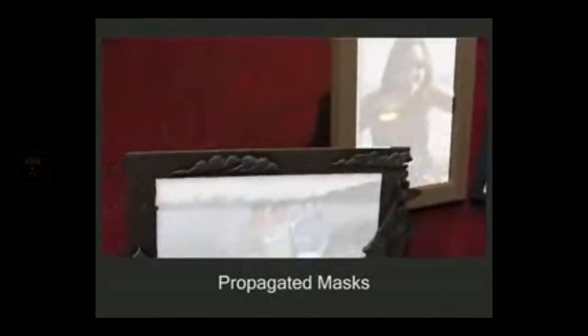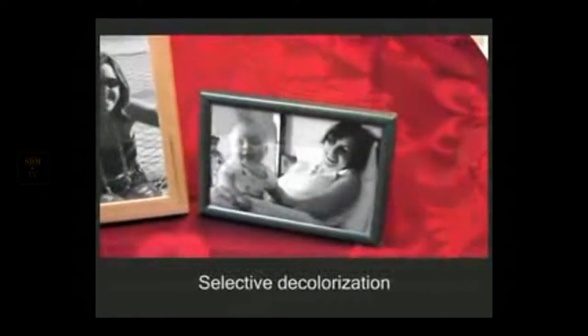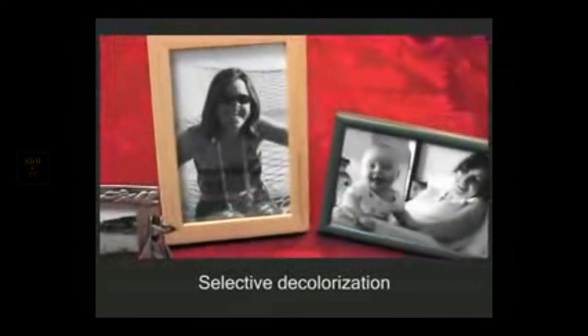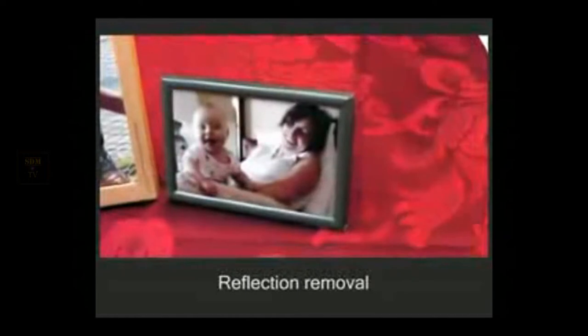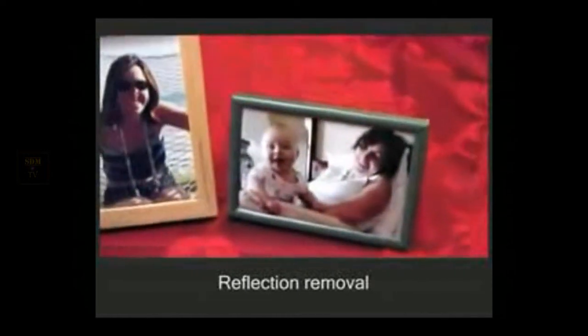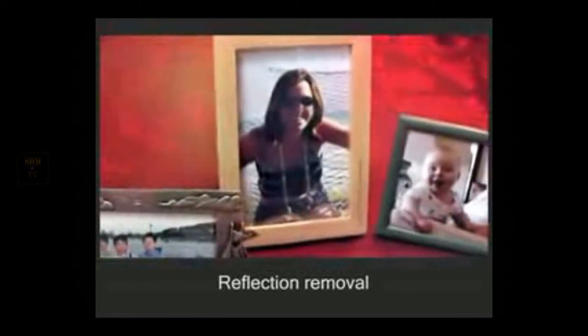The resulting matte is consistent with the occlusions in the scene. This matte can be used to create a variety of effects such as transforming the pictures to black and white. In the input video, the pictures contain reflections. These artifacts can be removed by inserting a reflection-free picture in each mask.